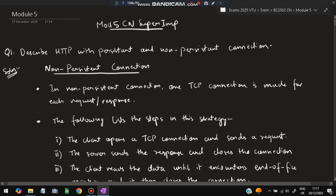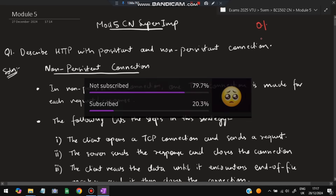Hello everyone. Today in this video we will be discussing the 5th module of CN super important questions. In this module we have 7 super important questions from the model paper as well as previous team papers. Solve these questions so that you can easily score more than 80% marks in the exam. Please do like and subscribe — it helps me make more videos like this.